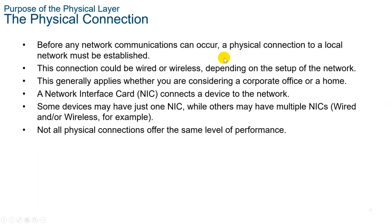Let's start with the purpose of the physical layer. Whether connecting to a local printer in the home or a website in another country, before any network communications can occur, a physical connection to a local network must be established. A physical connection can be a wired connection using cable, or a wireless connection using radio waves. The type of physical connection used depends on the setup of the network. For example, in many corporate offices, employees have computers physically connected via cable to a shared switch — this type of setup is a wired network where data is transmitted through a physical cable.